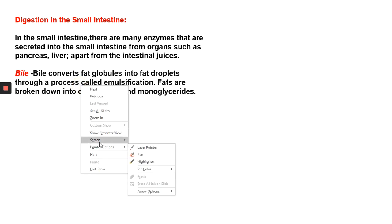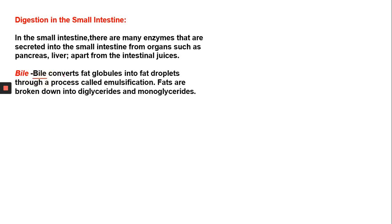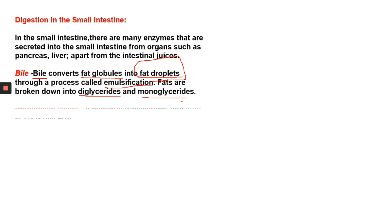Bile, produced by the liver, converts fat globules into fat droplets through a process called emulsification. The emulsified fats — the droplets — are called emulsified fats, and emulsification breaks fats down into diglycerides and monoglycerides. Diglycerides means two molecules of glycerol, and monoglycerides means one molecule of glycerol.